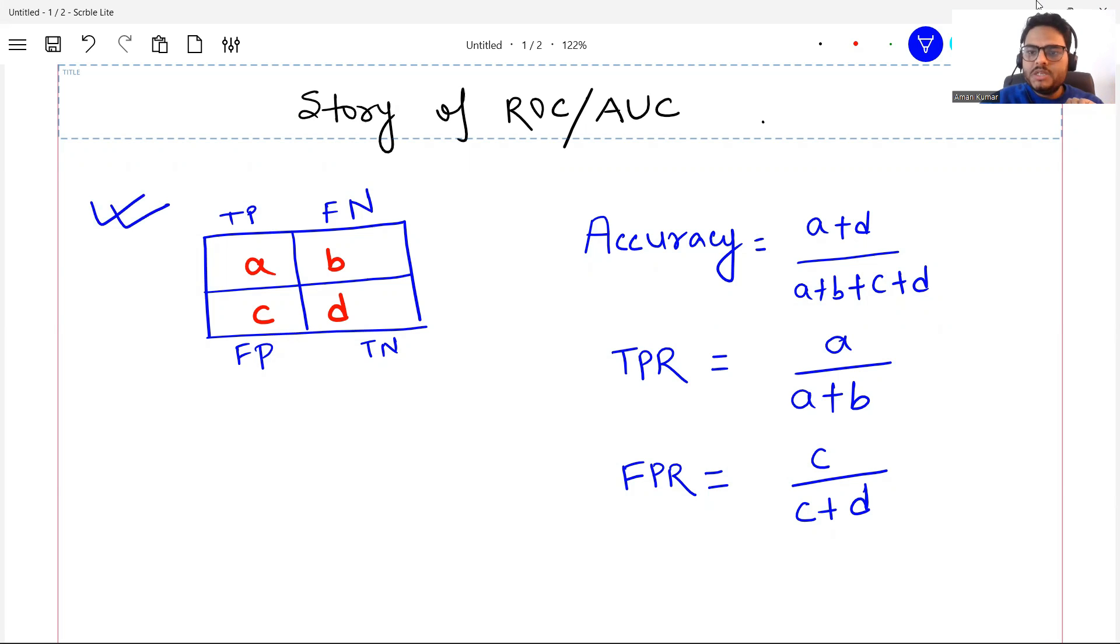From these numbers you get accuracy, true positive rate, and false positive rate. I will not go into much detail of these formulas. You already know all this. But one important thing to understand is you want a higher TPR and you want a lower FPR. Accuracy, ideally you want 100%.